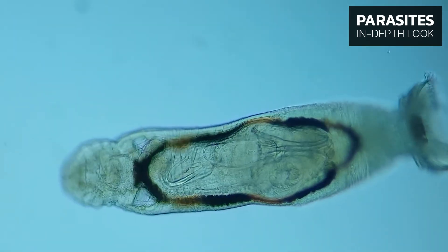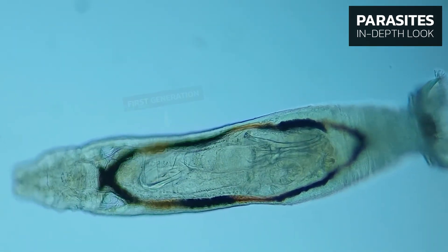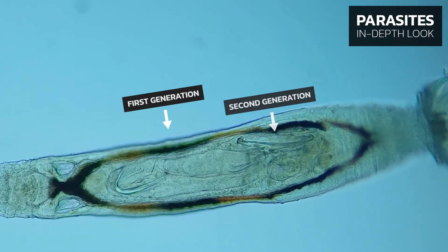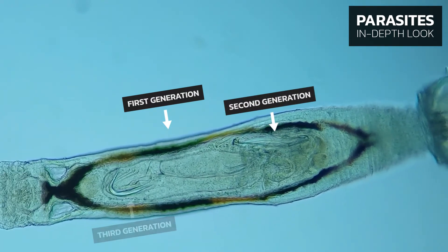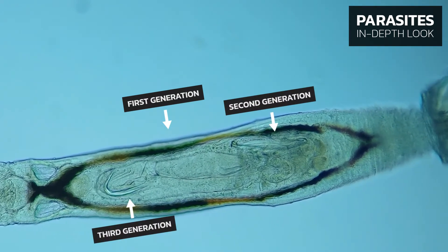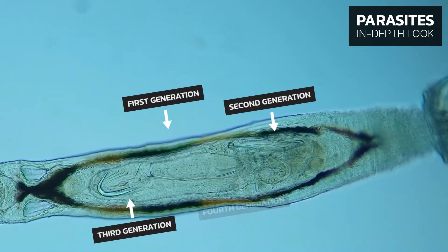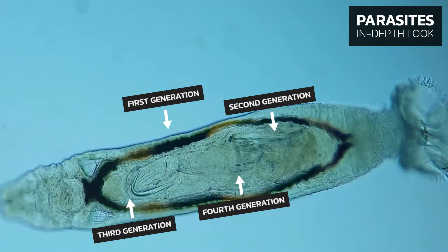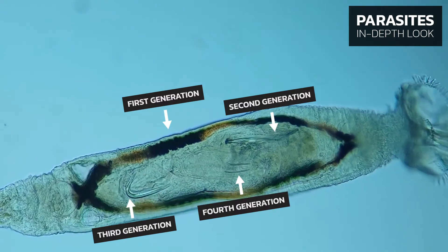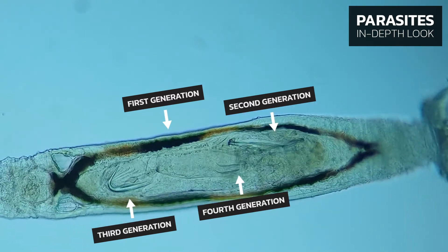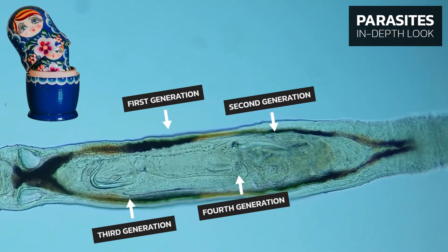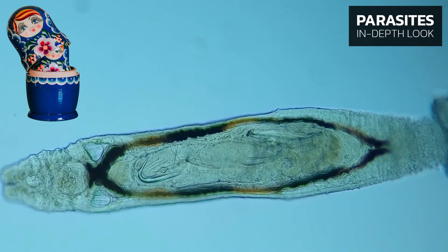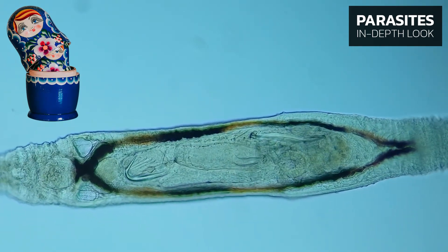If we assume that the parent is the first generation, then a second generation larva develops inside it, in which a third generation larva grows, and in which finally a fourth generation larva develops. In other words, these worms are like a matryoshka nesting doll with several generations of worms hiding inside.